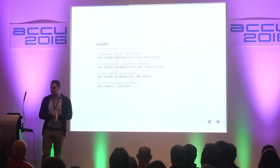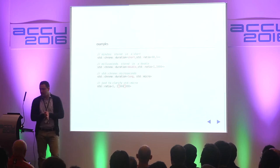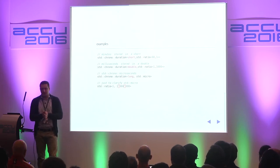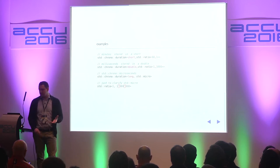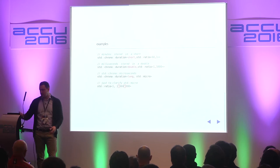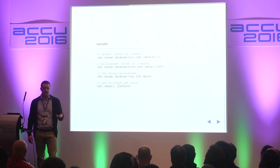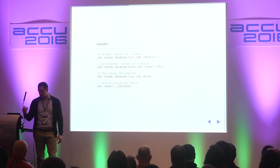For example, if you want to store minutes in a short data type, you use a duration of short and a ratio of 60 to 1, because there are 60 seconds in one minute. The same goes for milliseconds — there the ratio is 1 to 1000, since there is one second for every thousand milliseconds. There is also an example with std::micro.